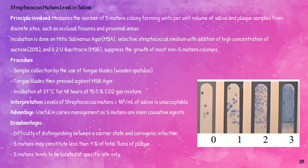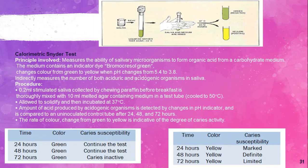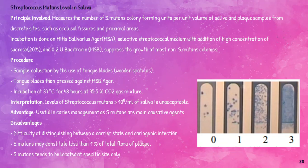Streptococcus mutans levels in saliva can be estimated by incubation on mitis salivarius agar. Mitis salivarius agar with a high concentration of sucrose and 0.2 bacitracin suppresses the growth of most non-mutans Streptococcus and other colonies. The sample is collected using a tongue blade and then incubated on the mitis salivarius agar for about 48 hours. Levels of Streptococcus mutans greater than 10^5 per ml of saliva indicate high caries activity.